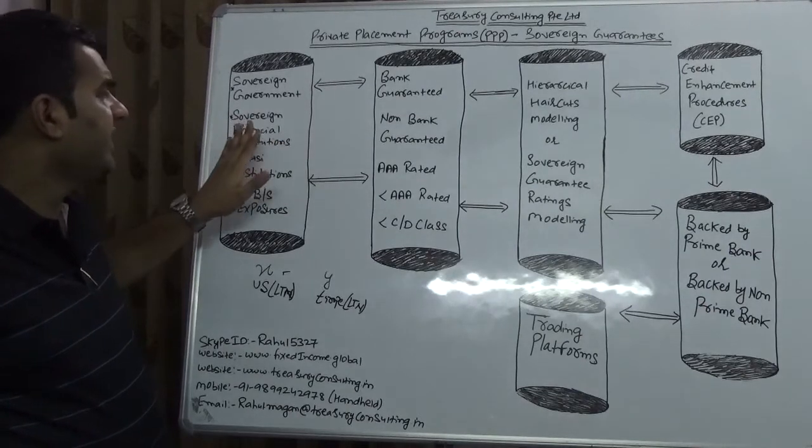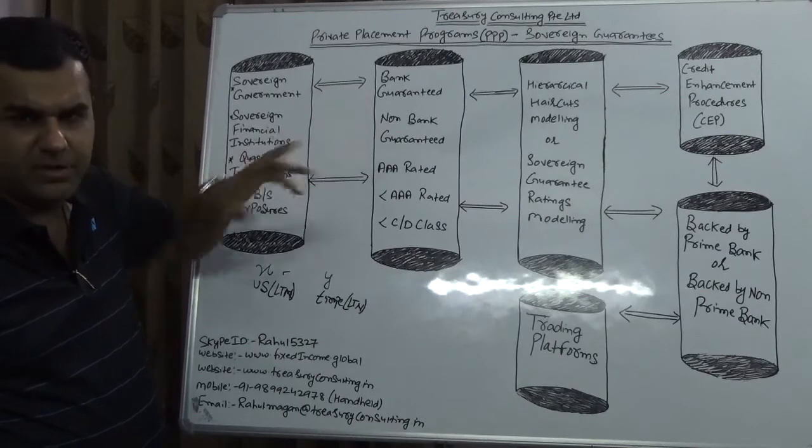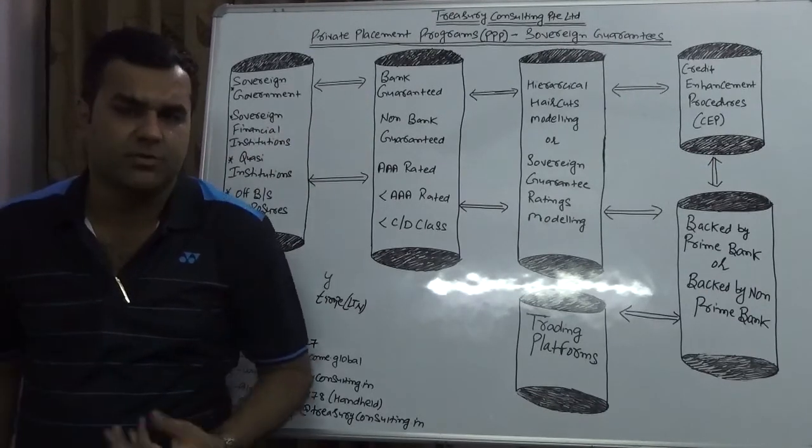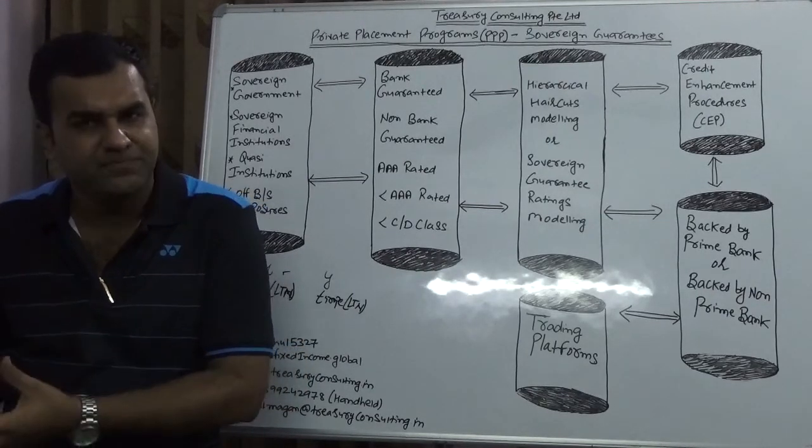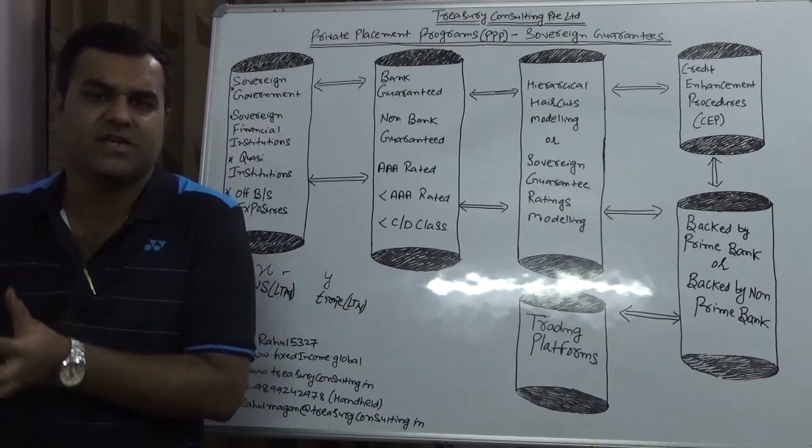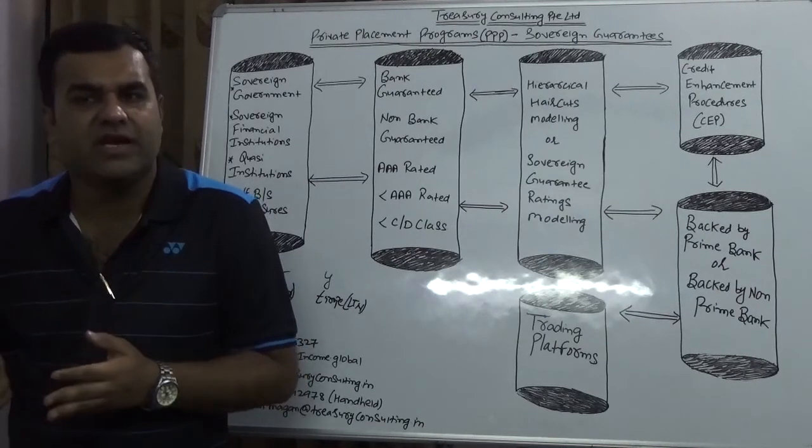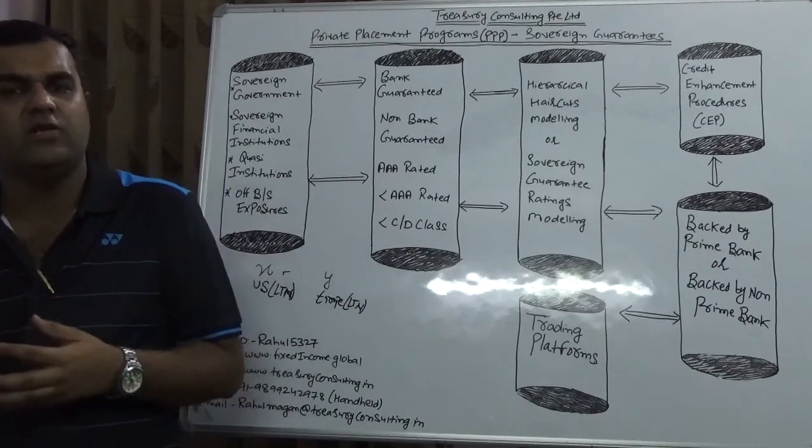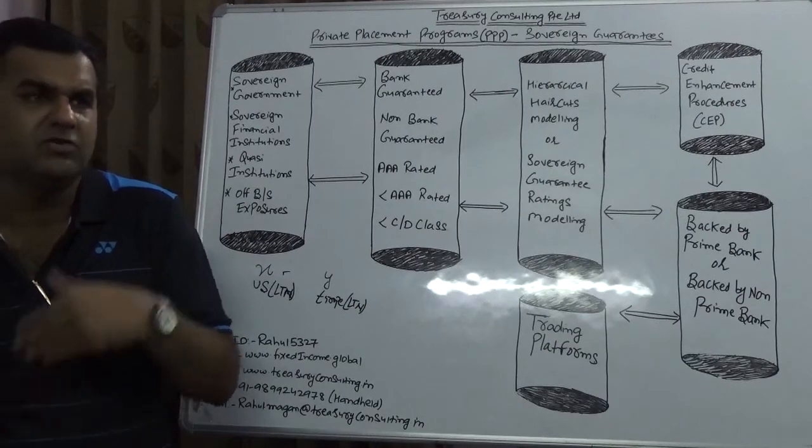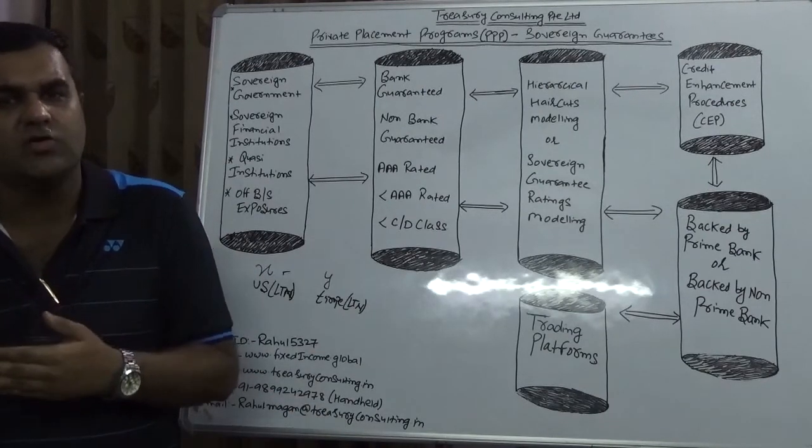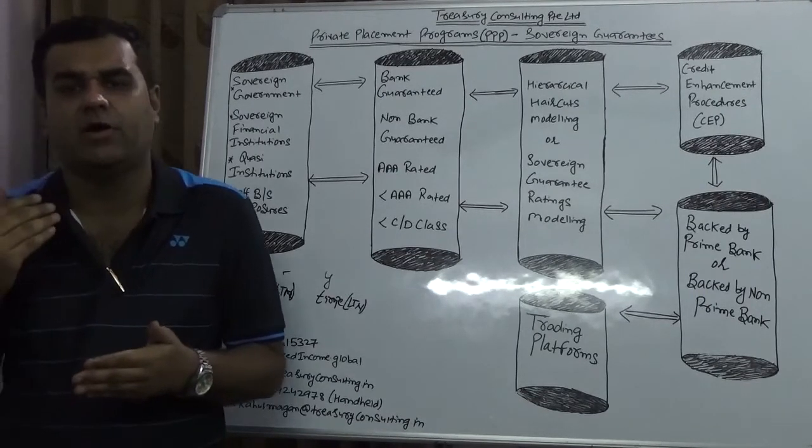Then these all sovereign guarantees have to be backed by bank. Sometimes they are bank guaranteed. A bank is giving a guarantee like in case of DBS Singapore. Once DBS Singapore is issuing a security, that's issued by a bank which is a financial institution and also stamped by the government of Singapore. So if you have a sovereign guarantee issued by DBS Singapore on the contrary you have a sovereign guarantee issued by any European country, then DBS Singapore would have more value than this European country.